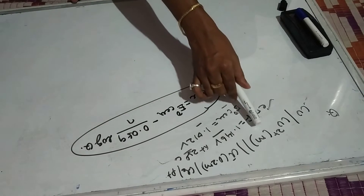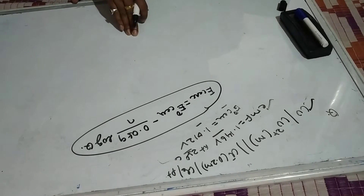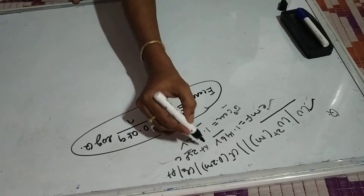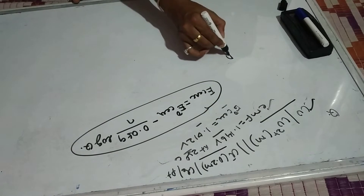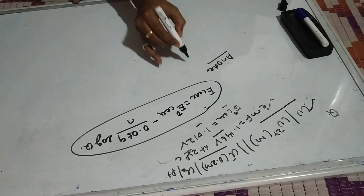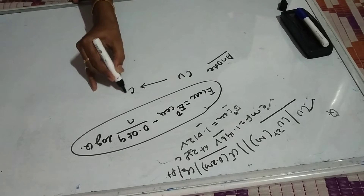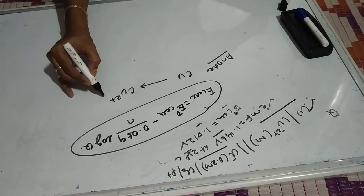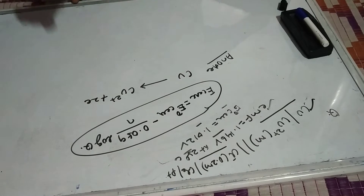Here this is the anode part and this is the cathode part. We know at the anode the oxidation reaction takes place, so the copper is converted to Cu²⁺. On the right side I will add 2 electrons to balance it.